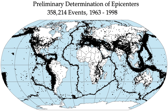Earthquakes are caused mostly by rupture of geological faults, but also by other events such as volcanic activity, landslides, mine blasts, and nuclear tests. An earthquake's point of initial rupture is called its focus or hypocenter. The epicenter is the point at ground level directly above the hypocenter.